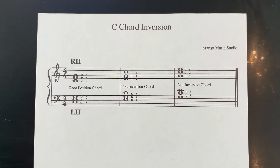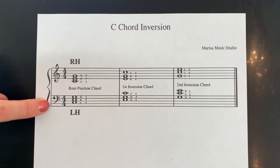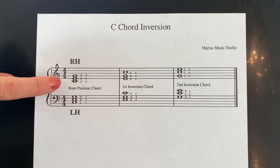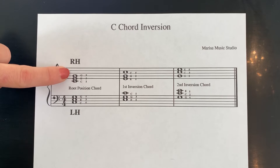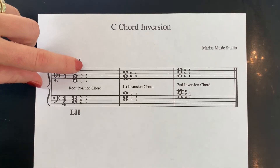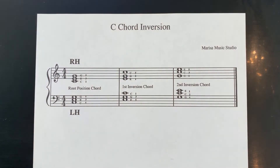Depending on which note is placed on bottom or is the lowest tone, you can make three different arrangements of a chord. Let's take a look at the sheet music. This is what the C chord inversion looks like on paper, on the staff. The little tiny letters and numbers next to them are the note names and the fingering, just written out in chart form for easy reference.